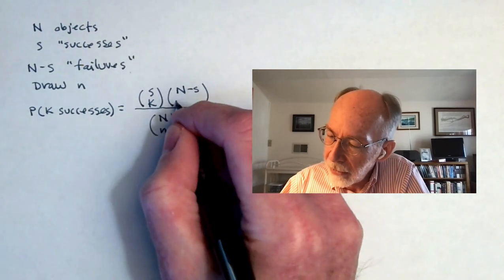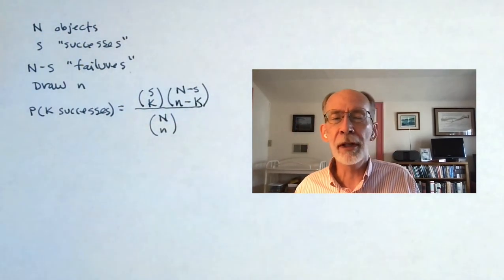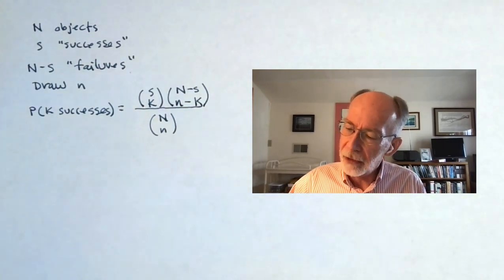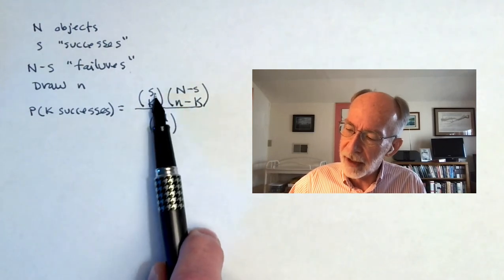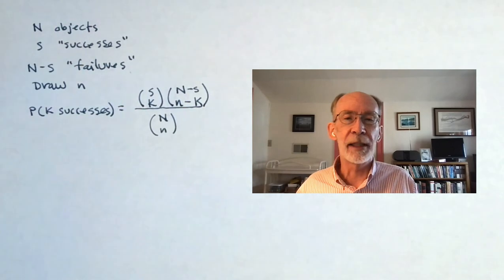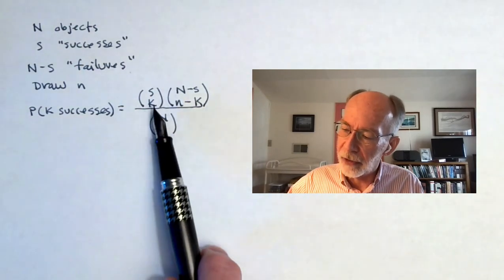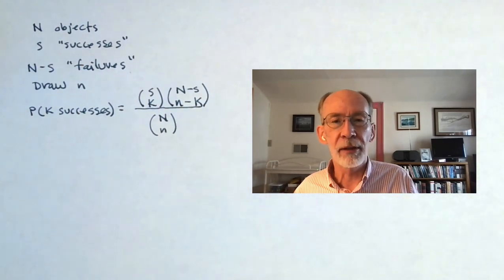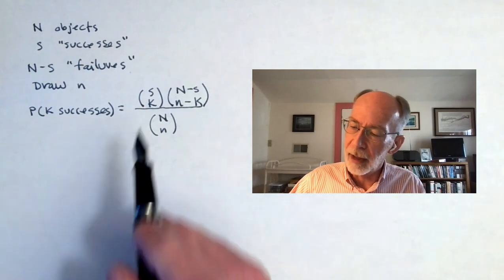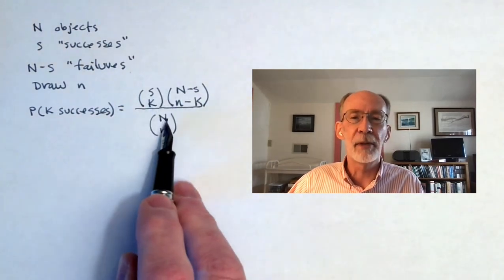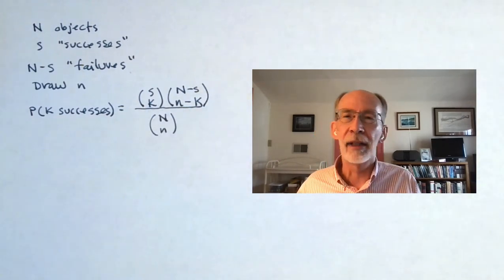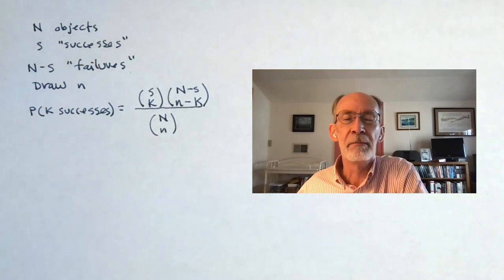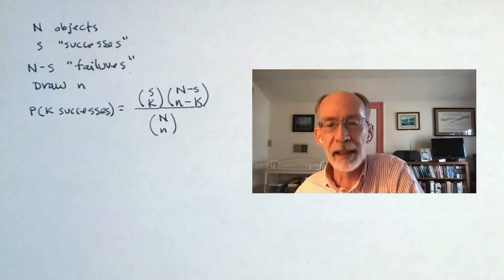And if we got K successes in our little n sample, how many failures did we get? We should have got little n minus K. And this structure has a feature that you may have noticed when we were looking at it numerically. And that is that the number of successes plus the number of failures has to equal the total number of objects in the original set. And the number of successes plus the number of failures has to equal the total number of objects in the set that we've drawn or sampled. So the top two up here in the numerator have to add to this top number in the denominator and same thing for the bottom numbers. And that's a nice quick little check. Once you've set up one of these things numerically, just make sure that there are no at least obvious mistakes that can be detected in that fashion.